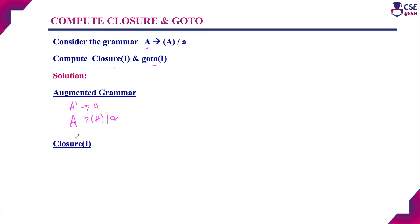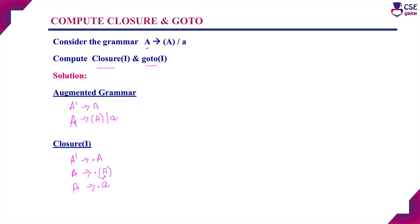Next, we need to compute the closure of I. To compute closure of I, we need to add a dot in the right-hand side of the production. For the first production, A' derives — add a dot in the RHS. After the dot, the non-terminal A is there, so we need to add the A productions: A derives dot open bracket A closed bracket, and A derives dot A. This is closure of I; consider this closure of I as state I0.